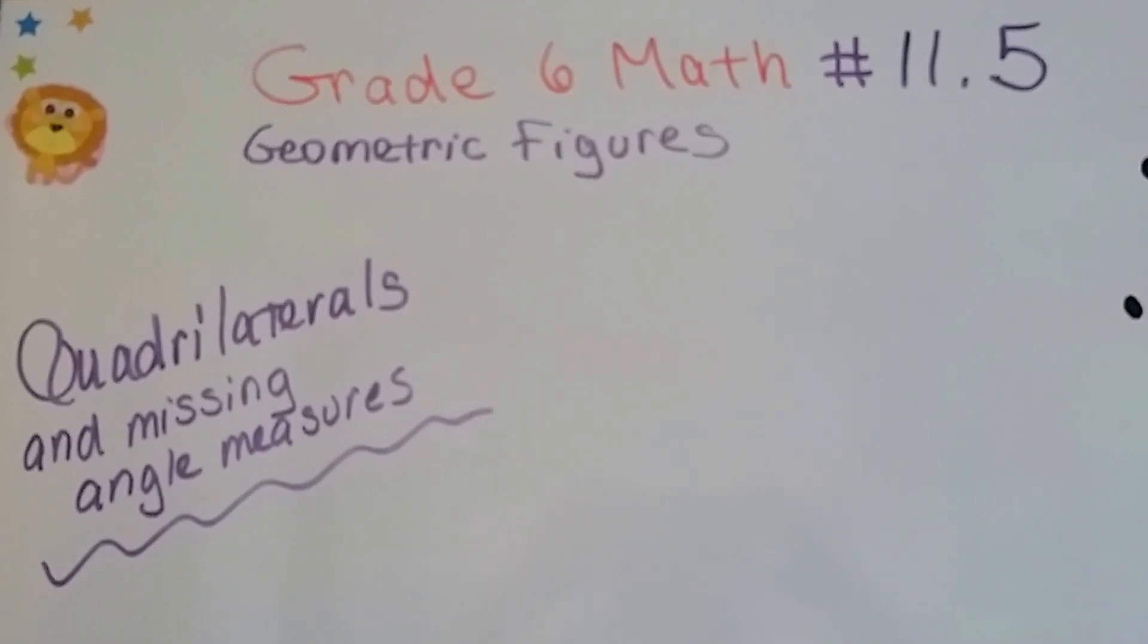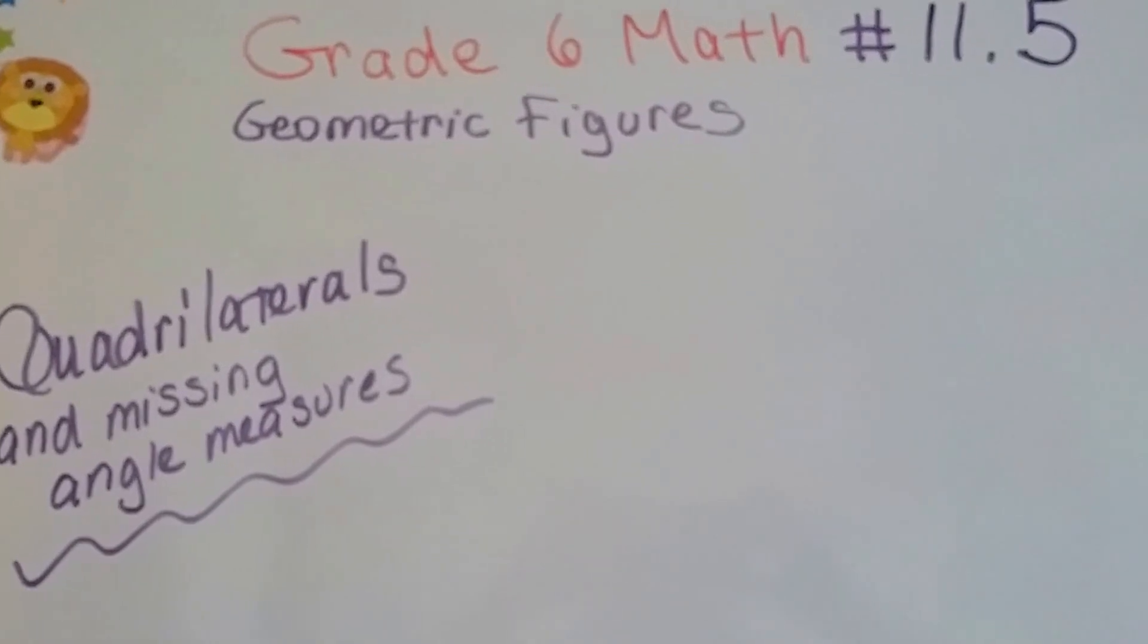Grade 6 math number 11.5, Quadrilaterals and Missing Angle Measures.